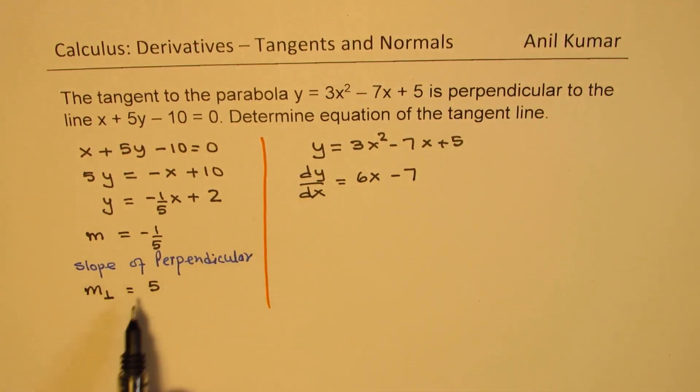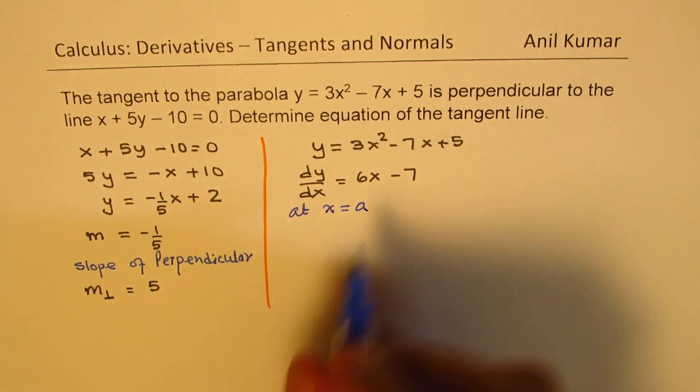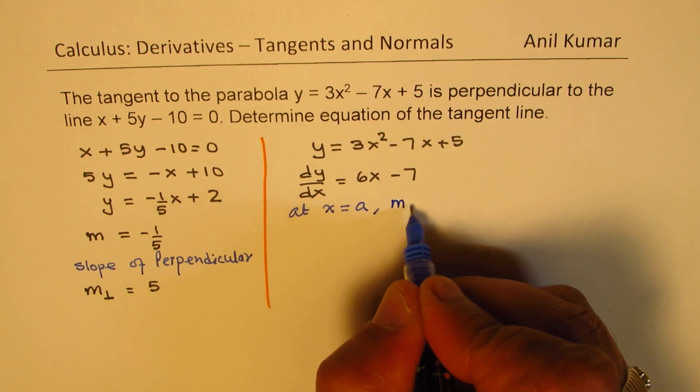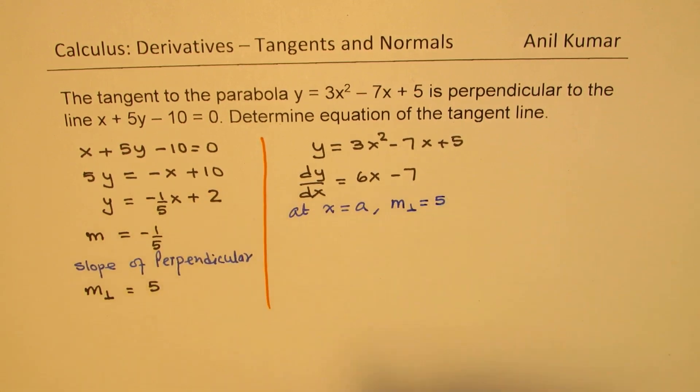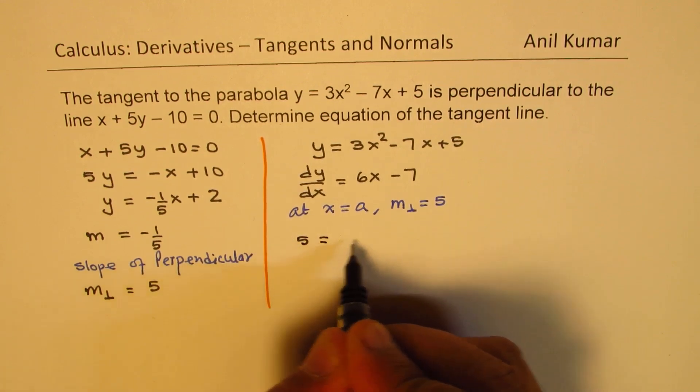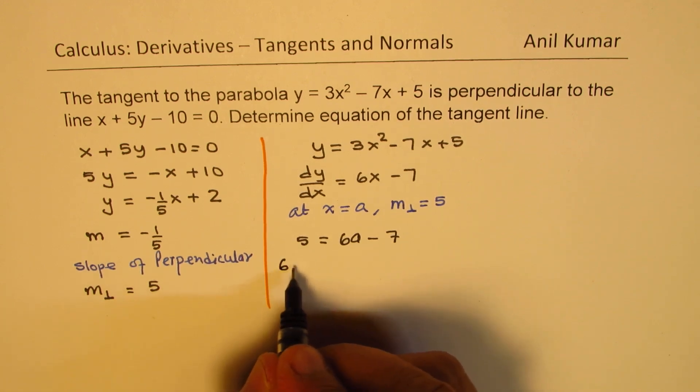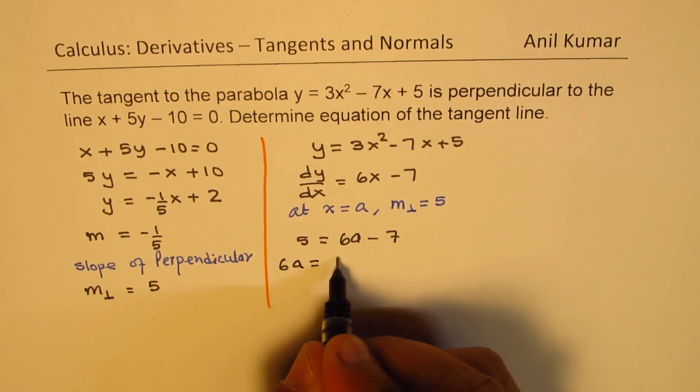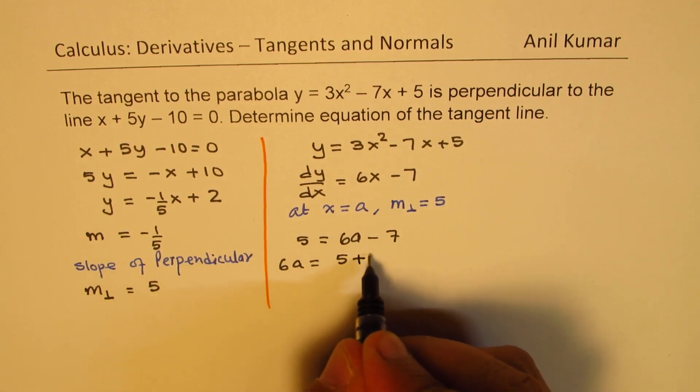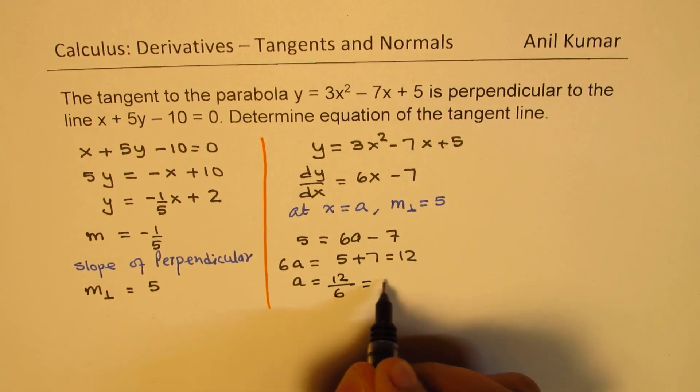Now, slope should be same as 5. So, we can find the point A. So, let us say at x equals A, we have same slope. We have slope as equal to 5. So, in that case, we can write this as 5 equals 6A minus 7. Now, we can write 6A equals, bringing 7 on this side, 5 plus 7, which is 12, or A equals 12 over 6, which is 2.